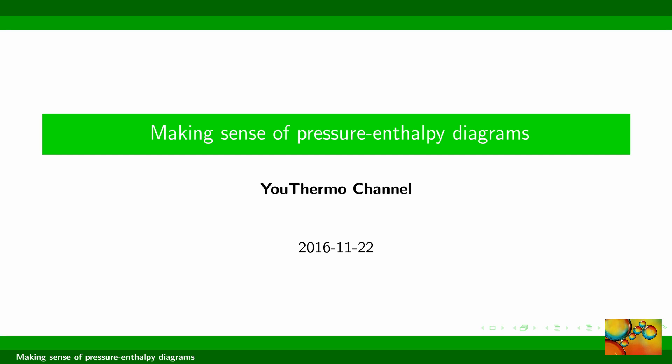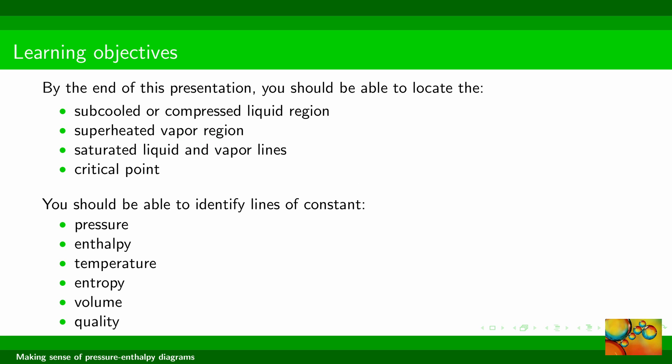Hello and welcome! In this video we are going to discuss Pressure Enthalpy Diagrams. By the end of the video you should be able to locate the subcooled or compressed liquid region, the superheated vapor region, the saturated liquid and vapor lines, and the critical point. Also, you should be able to identify the lines of constant pressure, enthalpy, temperature, entropy, volume, and quality.